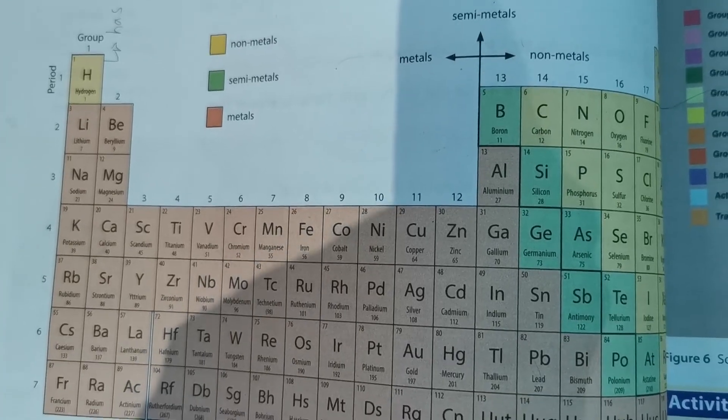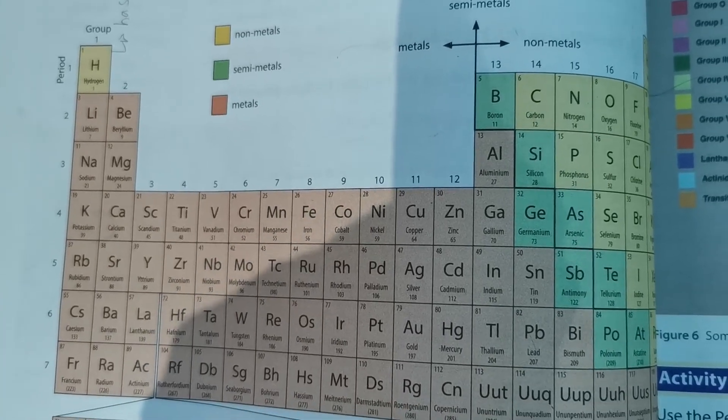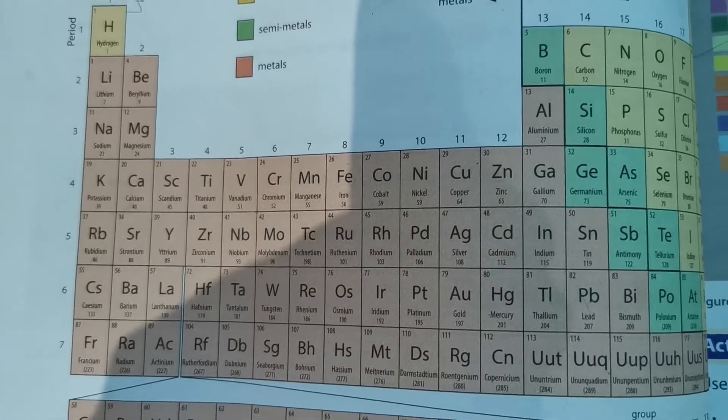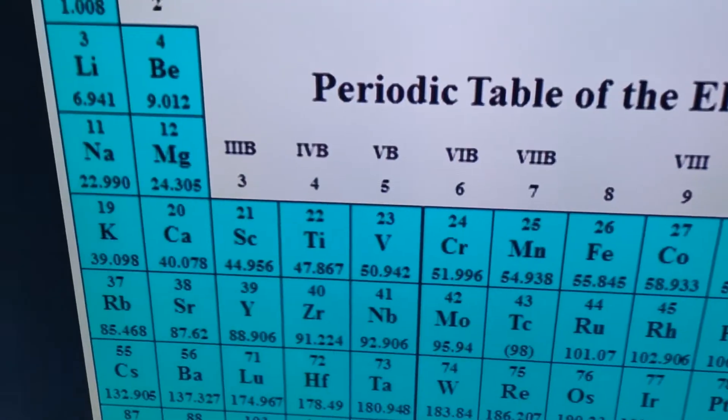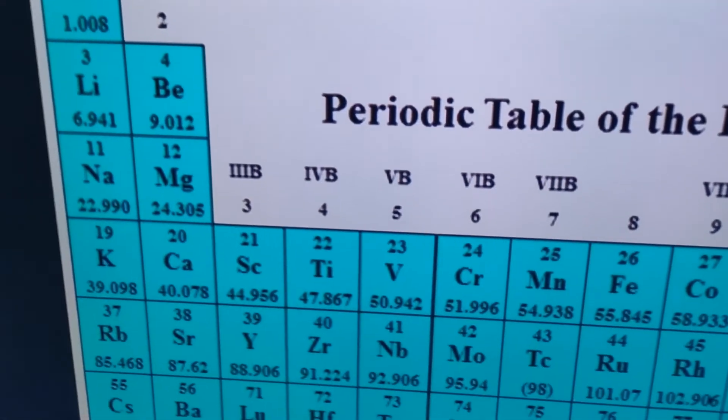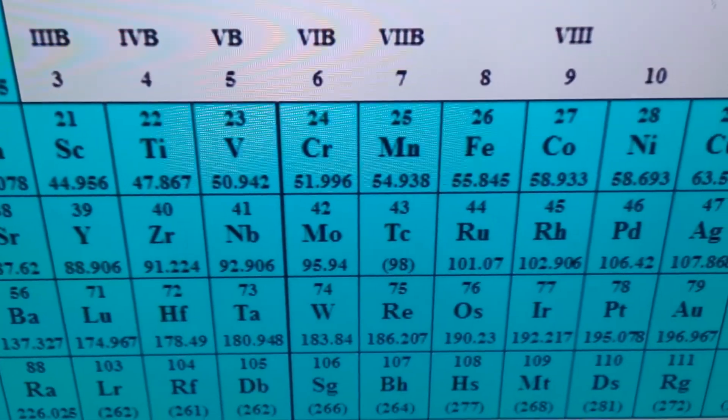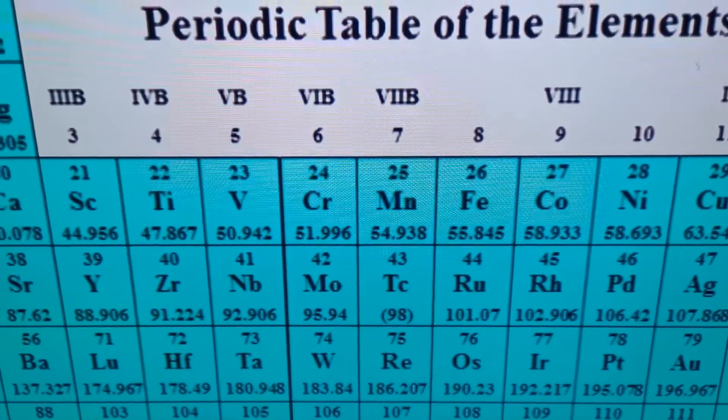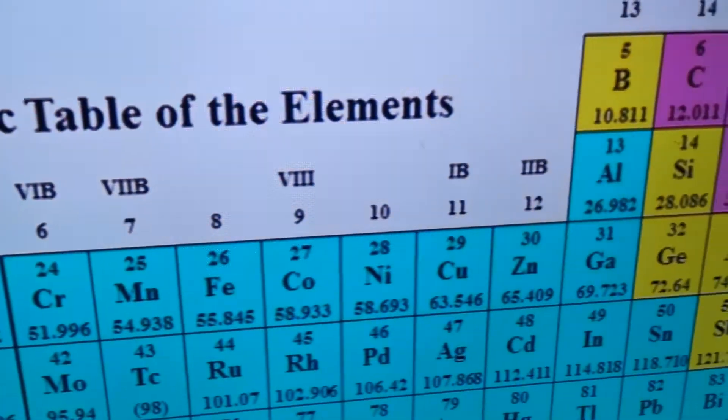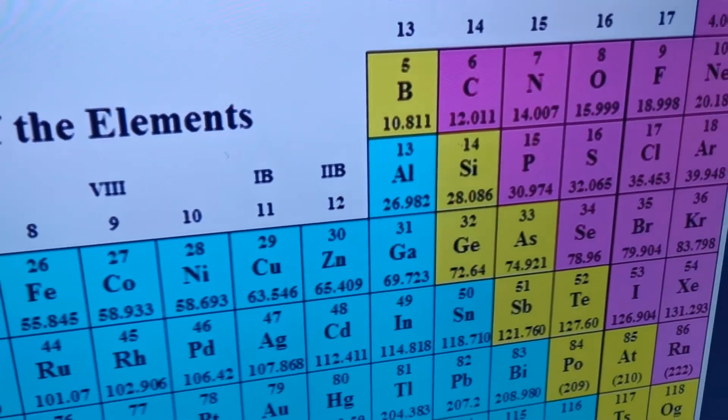All of the items in green are semi-metals. And then lastly, we have got our metals. On this one, we have got some blue. So we would have our non-metals, we would have our semi-metals and our metals.